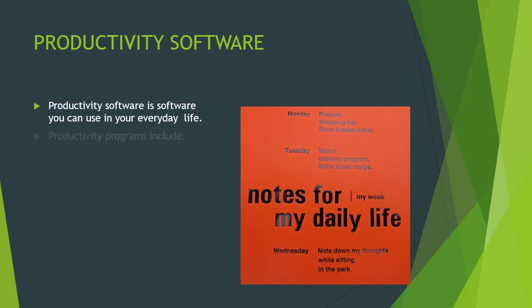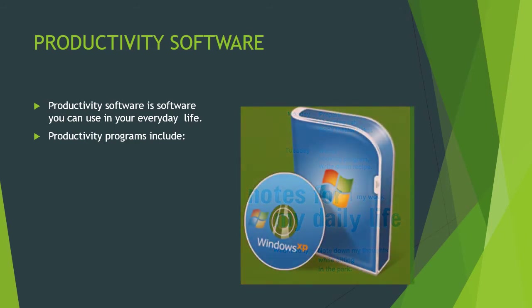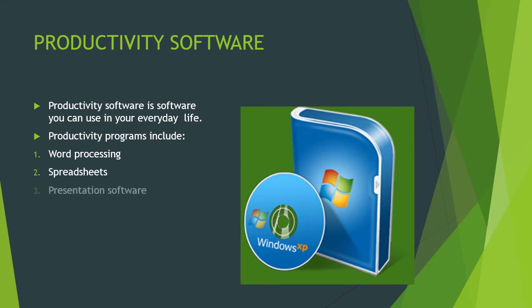What is productivity software? It's software you use in everyday life. These programs include word processing, spreadsheets, presentation software, and personal information programs like calendars and databases. It's safe to say you regularly use some form of productivity software already. These programs enable you to perform various tasks required at home, school, and business.